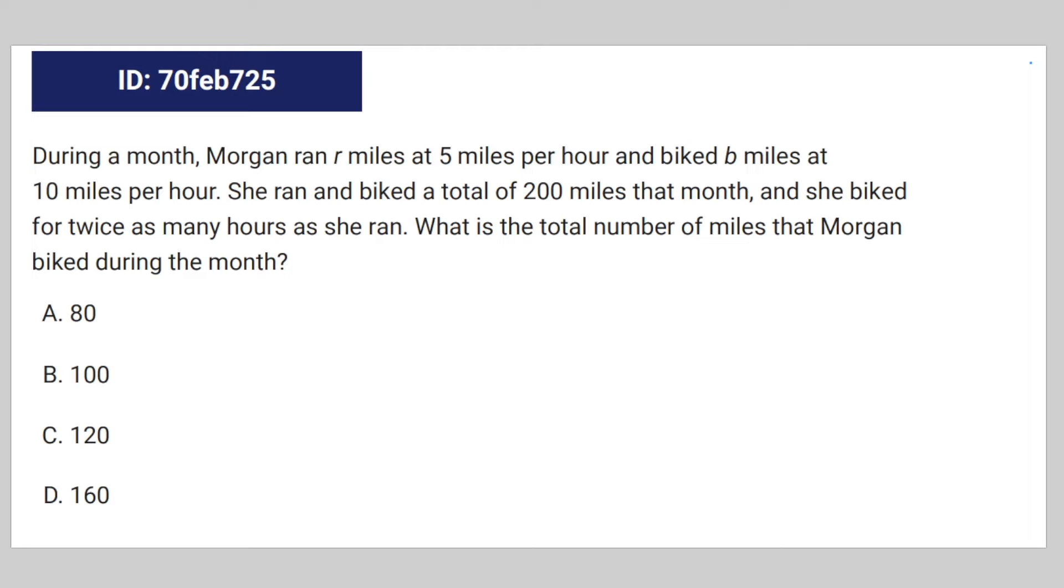So we have this algebra question. During a month, Morgan ran r miles at 5 miles per hour and biked b miles at 10 miles per hour. She ran and biked a total of 200 miles that month, and she biked for twice as many hours as she ran. What is the total number of miles that Morgan biked during the month?